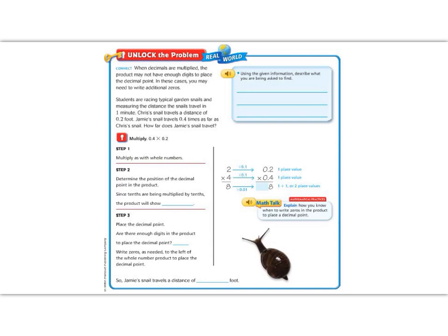In the blue box, it says, using the given information, describe what we are being asked to find. Well, we need to find what is 0.4 times as much as Chris, which is 0.2. So now let's go ahead and multiply these.